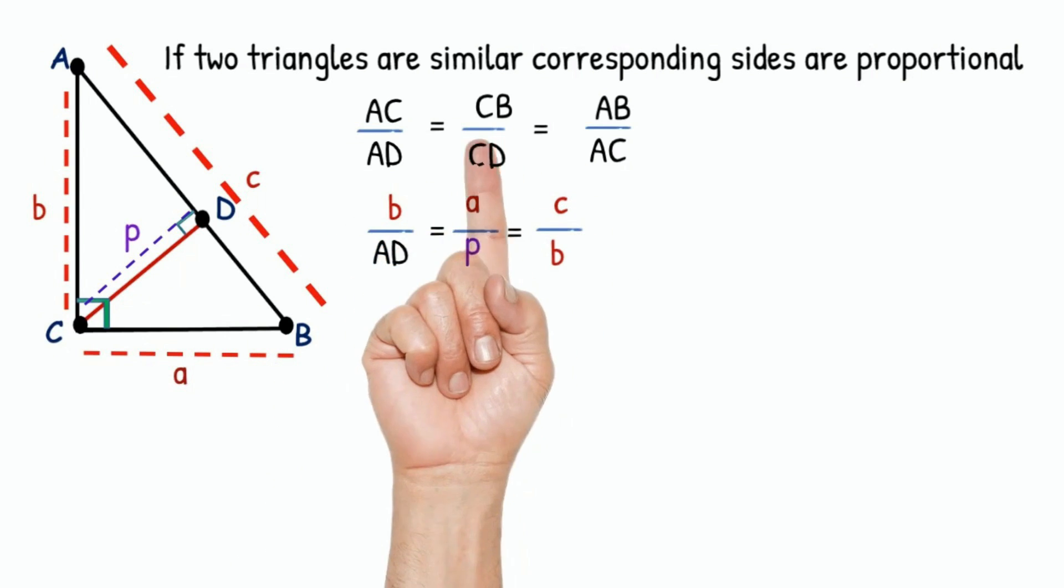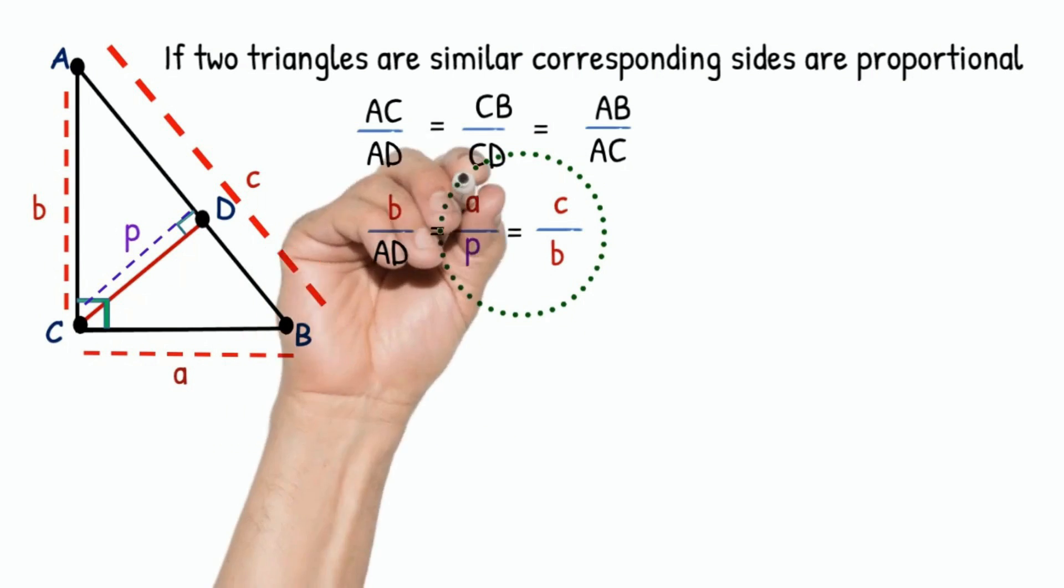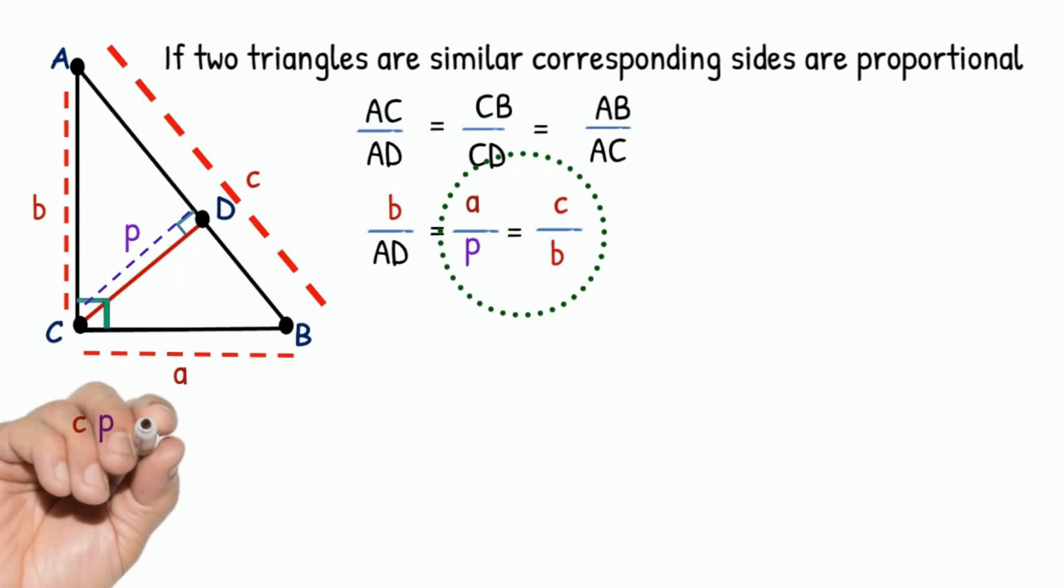Cross multiply the last two ratios. We get C into P equals A into B. So P equals AB divided by C.